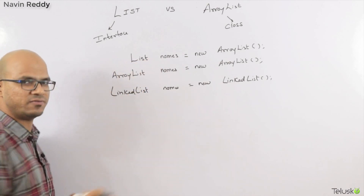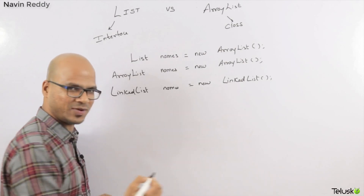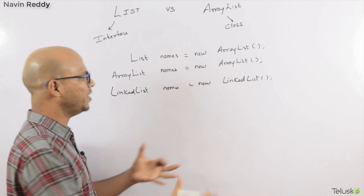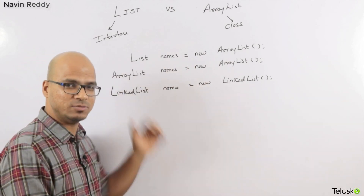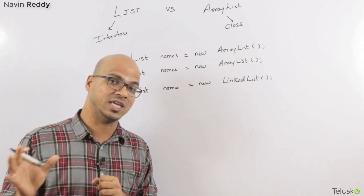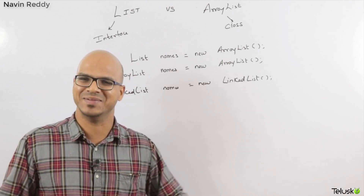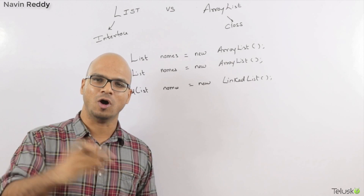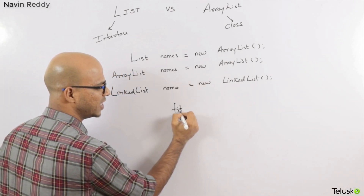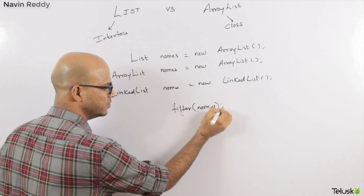For a very specific reason. Let's say you have a names variable and you want to filter out those elements — specifically, filter names which start with 'n'. You might be having names of type ArrayList, or names of type LinkedList. So let's say you want to filter those names. You would create a function or a method called filter, and this filter will take a parameter called names.